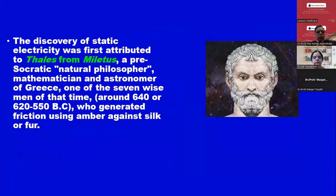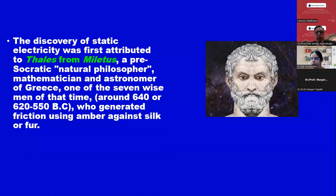Then comes the discovery of static electricity, first attributed to Thales of Miletus, a pre-Socratic natural philosopher, mathematician, and astronomer of Greece — one of the seven wise men of that time — around 640 BC. He generated friction using amber against silk or fur. Sometimes when we rub against clothes, we get a current-like sensation. That is what he did long ago.